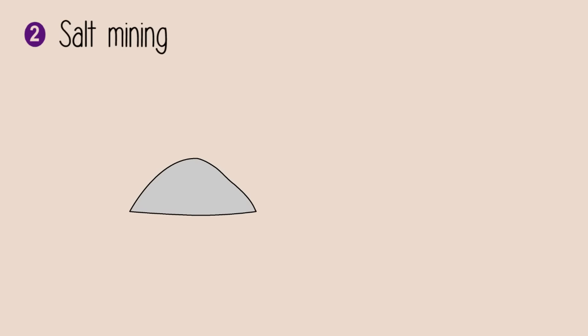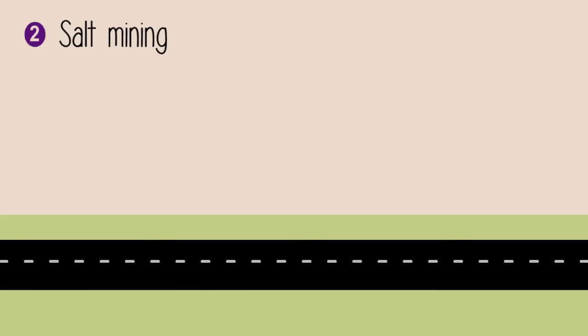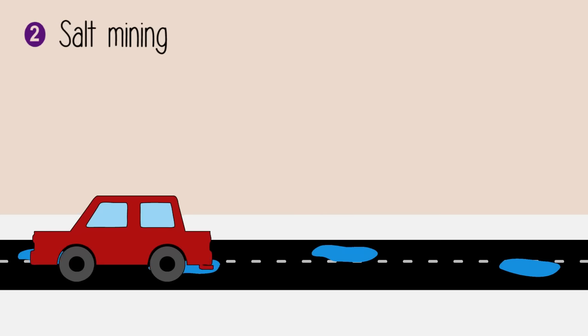This is usually a mixture of sodium chloride and calcium chloride. These salts work together to lower the freezing point of water, so snow does not freeze when it touches the roads and pavements.